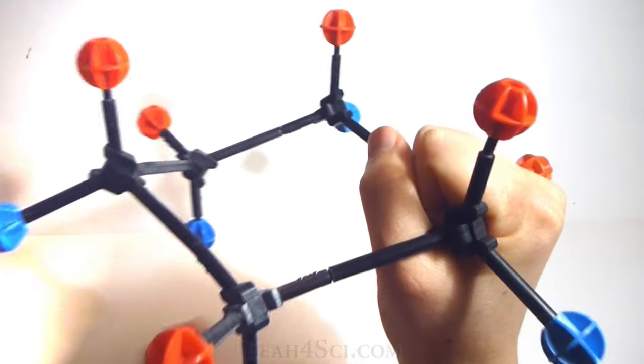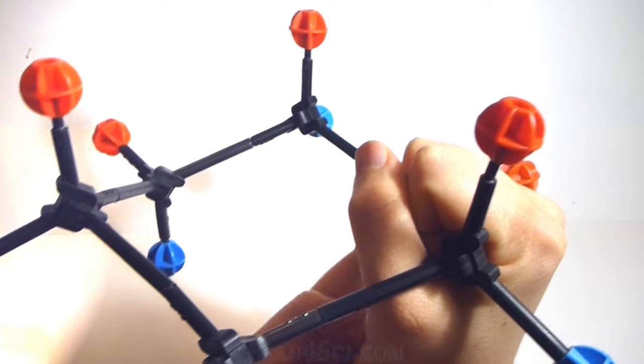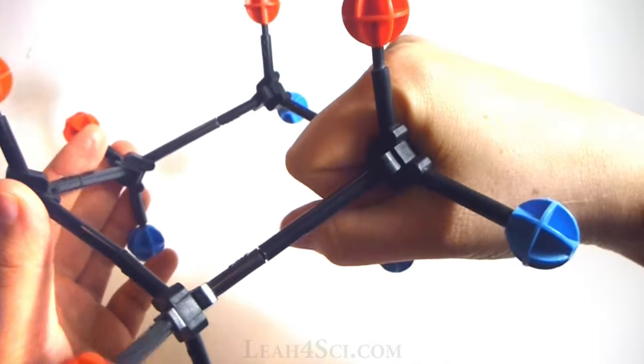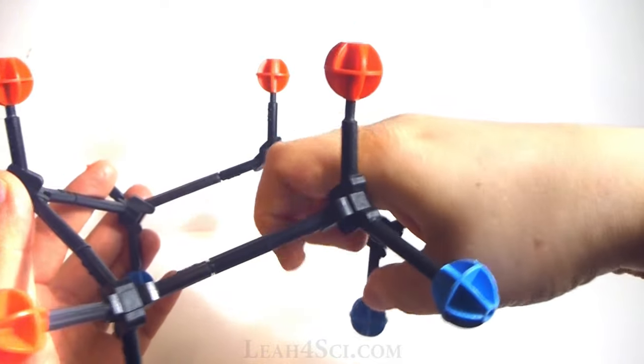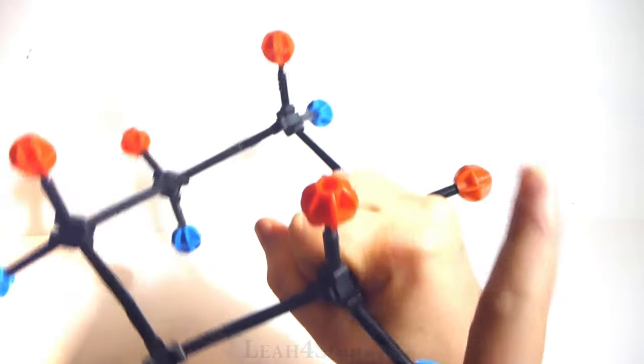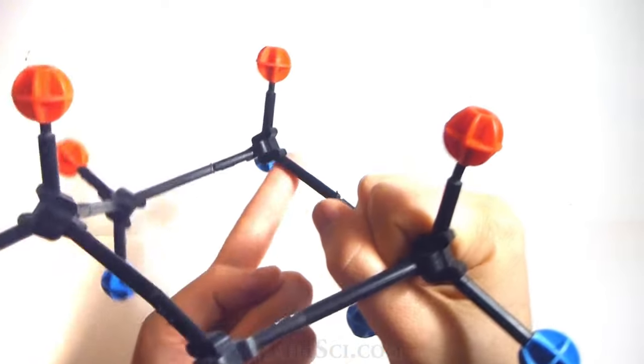This will give you that circle that you see in Newman projections. We're holding it right here, front carbon is visible, rear carbon is not because we're blocking it. We'll try to see past my fingers, we have a methyl group going down there, a hydrogen down there, the red hydrogen and then the rest of the ring.